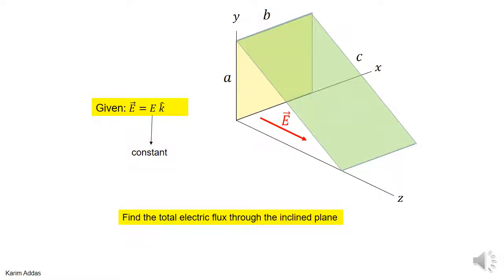In this problem, we want to find the electric flux through an inclined surface that has been rotated. The difference from the previous problem is that the size of the area is different — previously we just rotated it while keeping the area the same size.